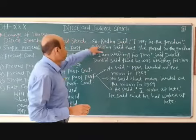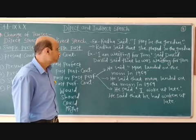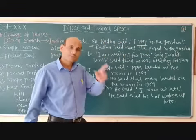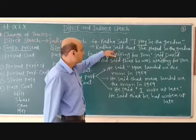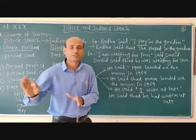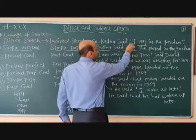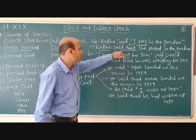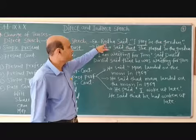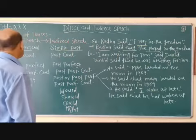For example, Raha said, "I play in the garden." This is the sentence. So what is the tense? I play — simple present tense. So now when we convert it into indirect speech, the tense will be simple past tense. We remove the comma and inverted commas and use the conjunction 'that'. Raha said that she played in the garden. So simple present 'play' becomes simple past 'played'.